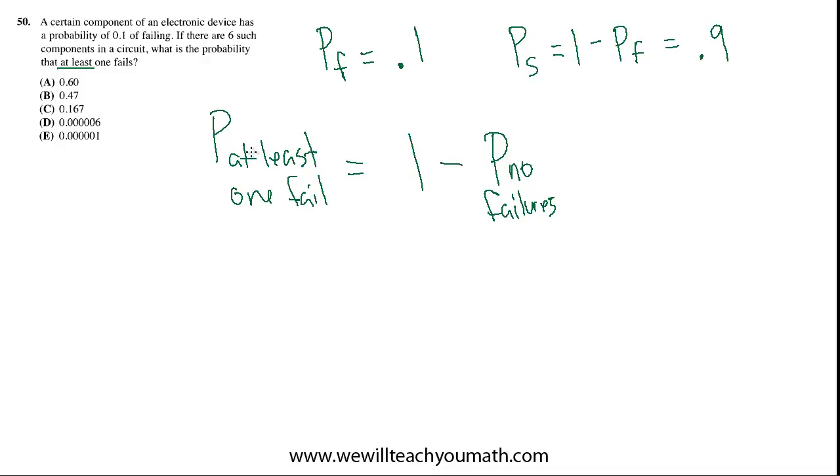Then, the probability of 1 failing plus the probability of 2 failing plus the probability of 3 failing and on and on and on. This is really easy. This is the probability of all 6 succeeding.